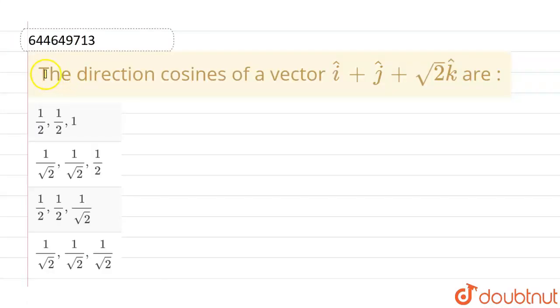Hello everyone, if we talk about this question, this given question is the direction cosines of a vector which is represented by i cap plus j cap plus root 2 k cap are, and these are the given options.